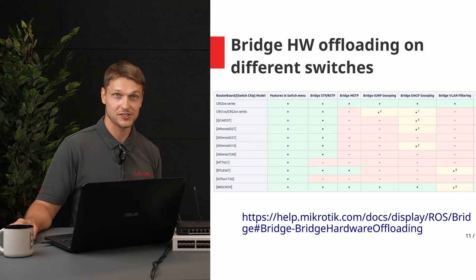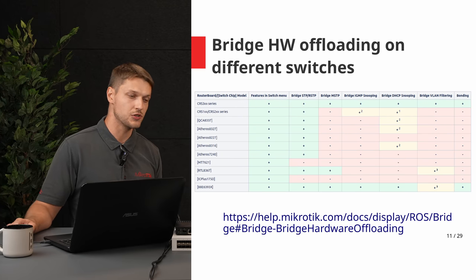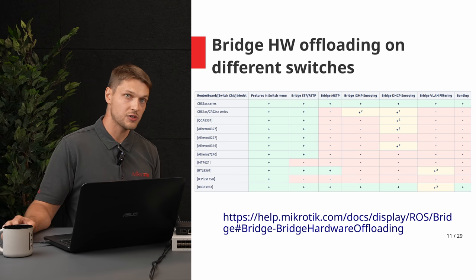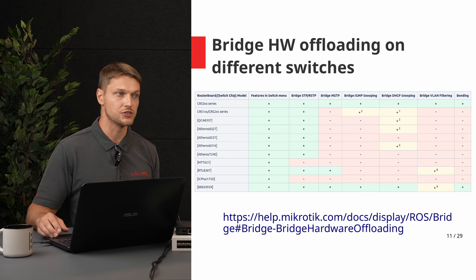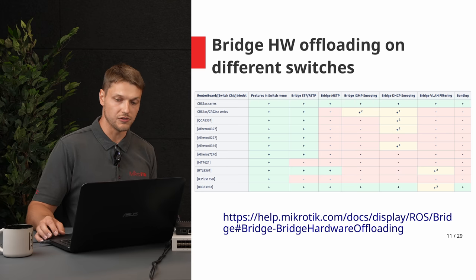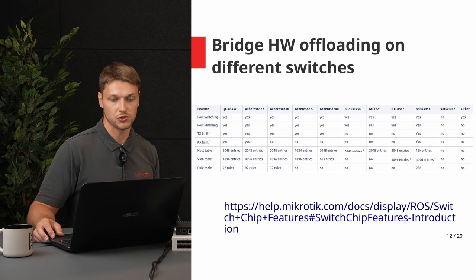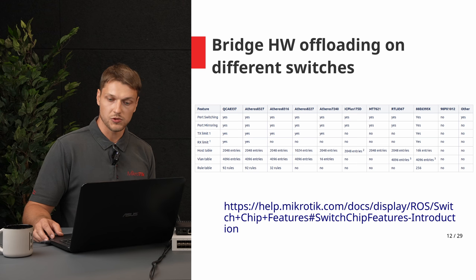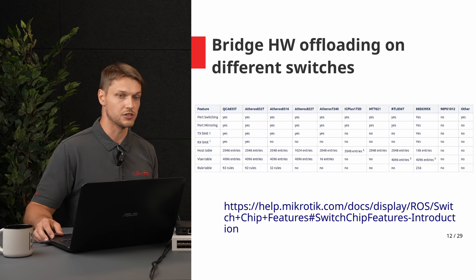Sometimes when you enable a feature, hardware offloading stops working. Different switch chips have different sets of features. Sometimes enabling VLAN filtering will disable hardware offloading. Before buying a device, check the supported features for each switch chip in the bridge manual. Also, some switches still support VLANs through the switch menu.